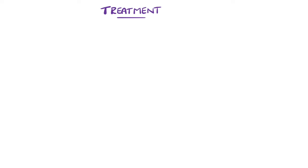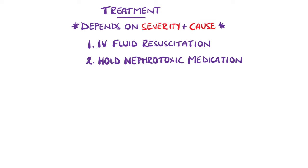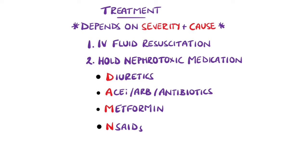The treatment depends on severity and on the underlying cause. In most cases, intravenous fluids are given to promote renal perfusion, with one of the main exceptions being when the patient is fluid overloaded. Offending medication should be reviewed on a risk-benefit basis, and the mnemonic DAM — for diuretics, ACE inhibitors or angiotensin receptor blockers, and antibiotics, metformin, and non-steroidal anti-inflammatories — can help remember some of these. Metformin is included because it is excreted by the kidneys and can predispose to acidosis.